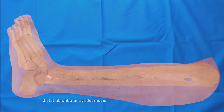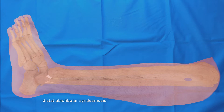The distal tibiofibular syndesmosis is a complex fibrous joint that links the distal tibia and fibula by multiple ligaments and a strong fibrous membrane. If this syndesmosis is ruptured due to an ankle injury, it may be an indication for surgery. If left untreated, it can cause chronic instability and pain.